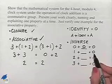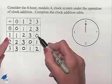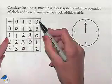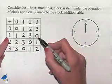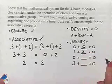1 plus what gives us 0? Let's check the table. We need to come up with the result of 0 by adding 1 to another value. If we take 1 and add 3 to it, we come up with 0. So, 1 plus 3 is going to give us 0.